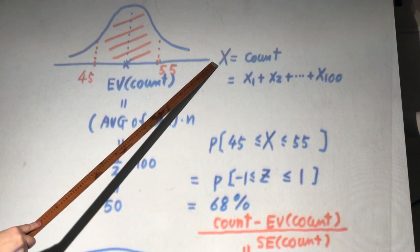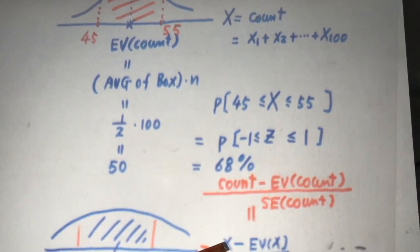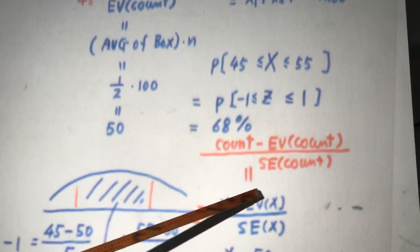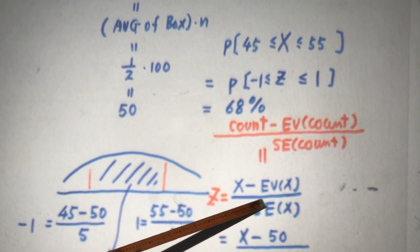How do we standardize something? Well, the variable subtract by its average divided by standard deviation.